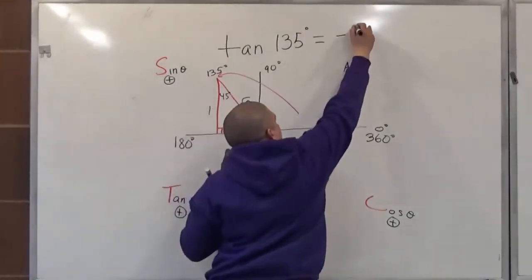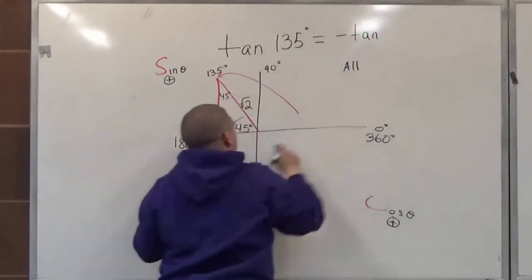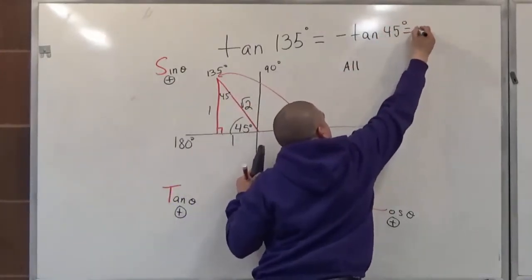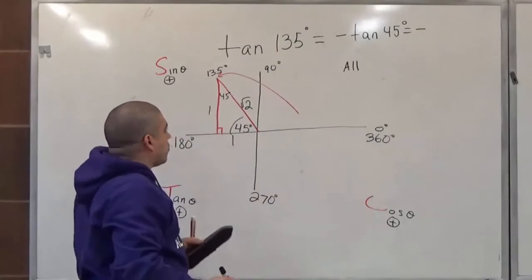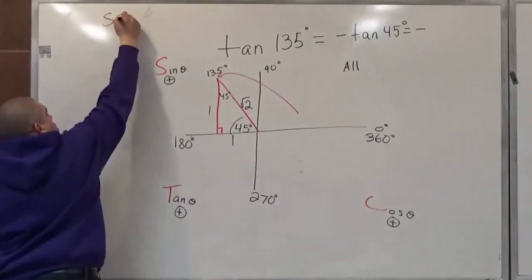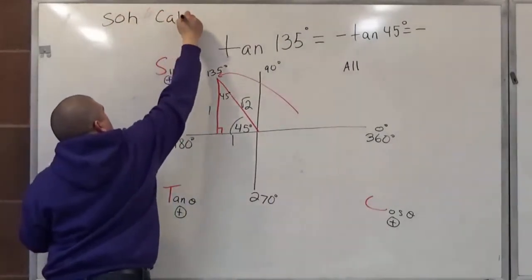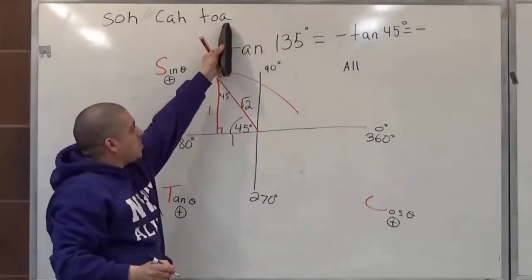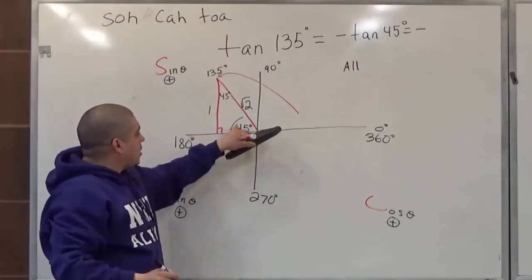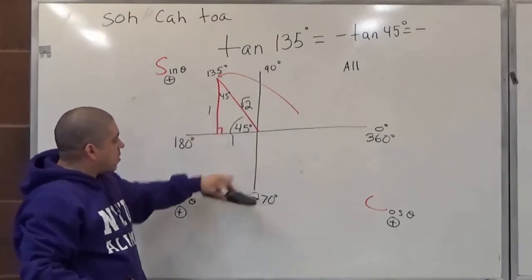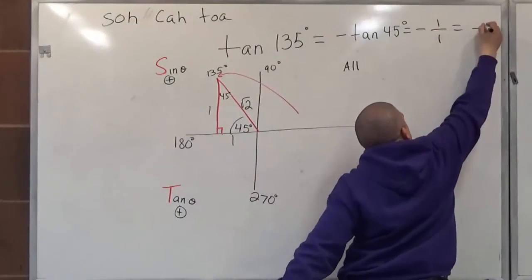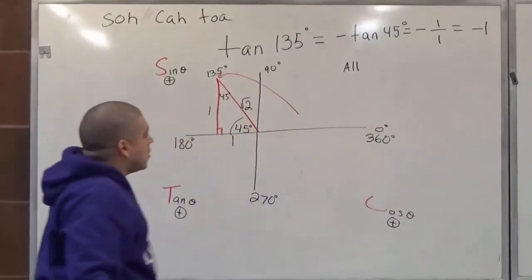And then, instead of 135 degrees, I'm going to deal with the reference angle, 45 degrees. So tangent of 45 degrees, based on soh-cah-toa, is opposite over adjacent. So I'm going to go to 45 degrees, and it's opposite over adjacent. So it's one over one, which equals negative one. And that's it.